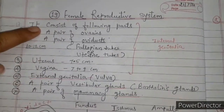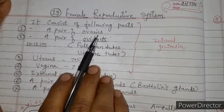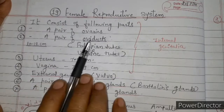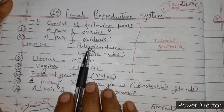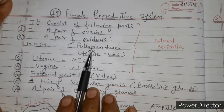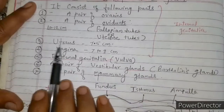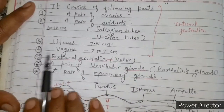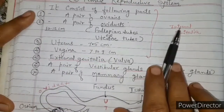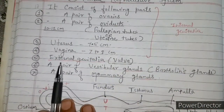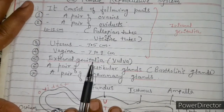This system consists of the following parts: number one, a pair of ovaries; second, a pair of oviducts — also known as fallopian tubes or uterine tubes; third, the uterus; fourth, the vagina. All these are the internal genitalia. The fifth part is the external genitalia — genitalia means genital organs.